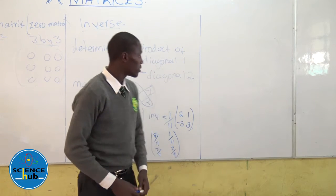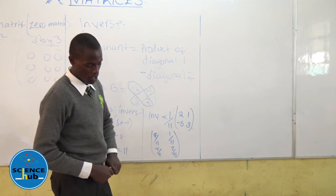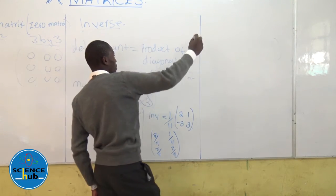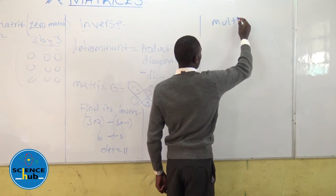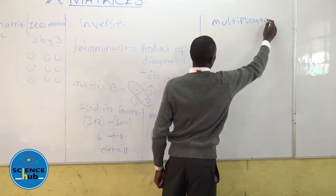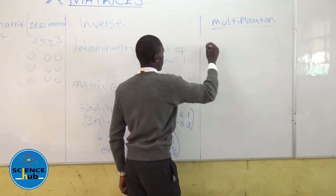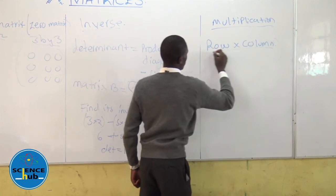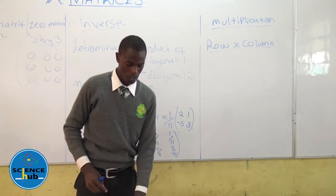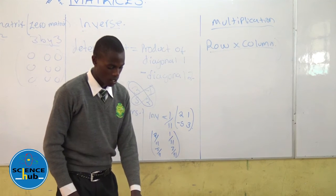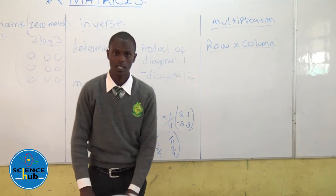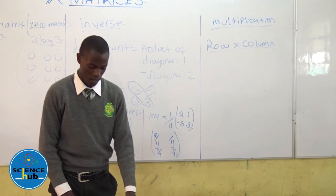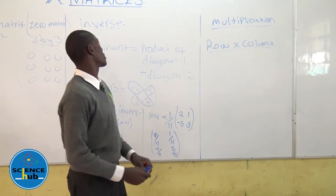Then, something to note about the multiplication of matrices. In multiplication of matrices, if the determinant is zero, there is no inverse of the matrix.